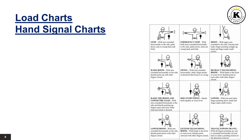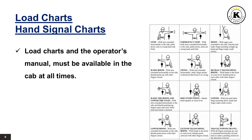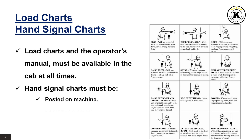The load charts and the operator's manual must be available in the cab at all times. The hand signal charts must be posted on the machine and in the vicinity.